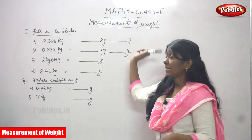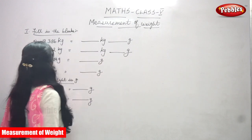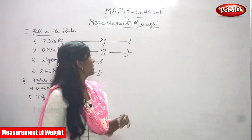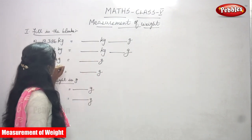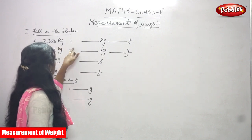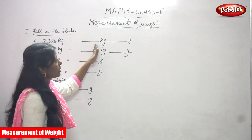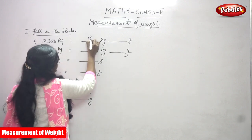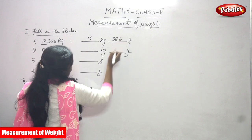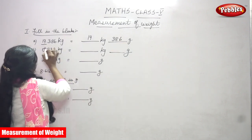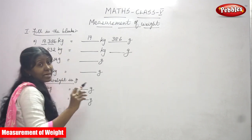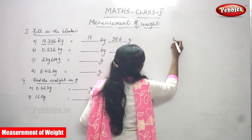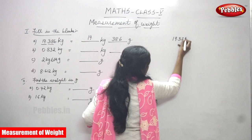This is Class 5. Now, fill in the blanks. 19.386 kilogram — you have to convert into kilogram and gram. So look at this: 19 is the kilogram part because it is the whole number, and the remaining 386 after the decimal point is the gram.